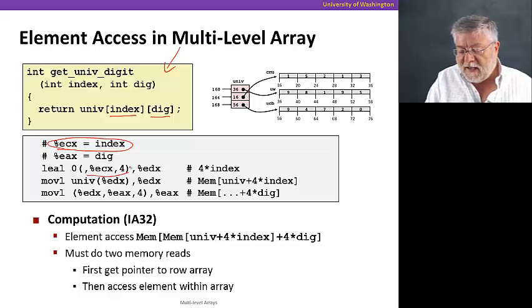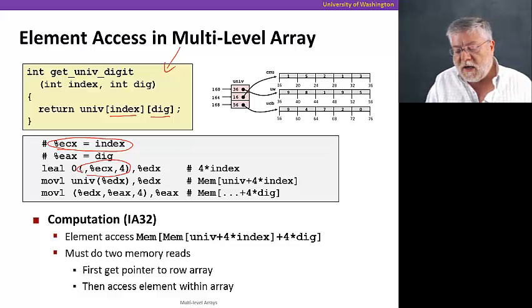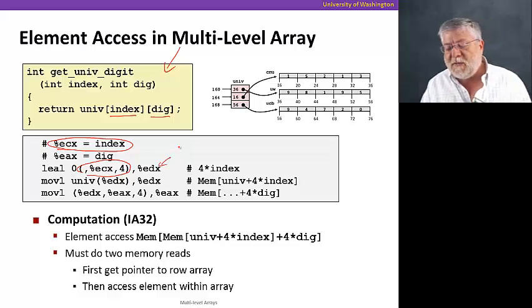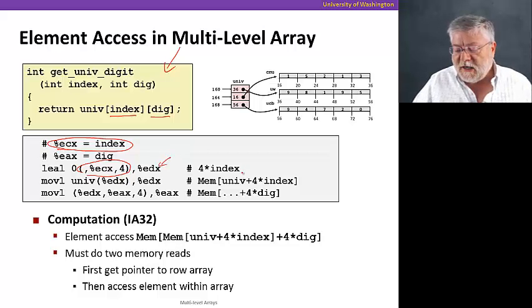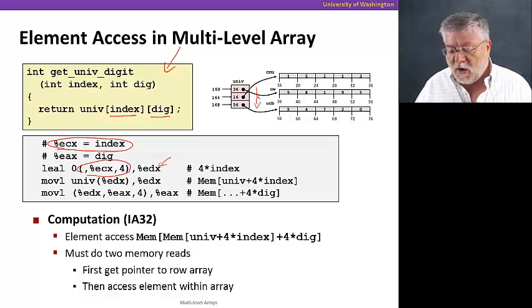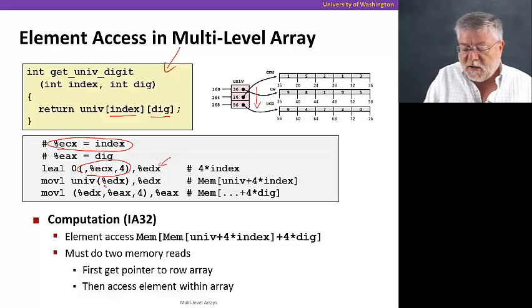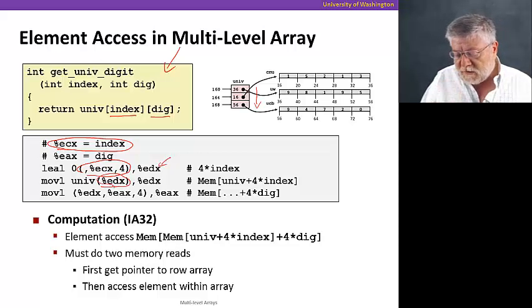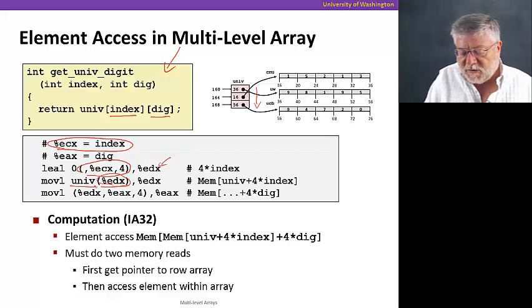And we're going to multiply that by four and put the result in EDX. And why are we multiplying it by four? Well, because we're indexing into our univ array and we need to know how much of an offset to have, to get the right pointer. Once we have that pointer, you'll notice we will use that offset we've just computed, add it to the starting address of the array, and then access that memory location.